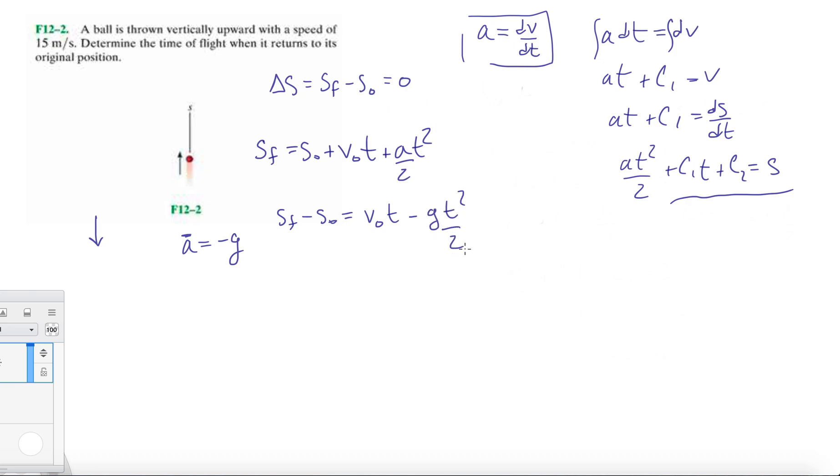T squared over two. In all free fall problems or the projectile motion problems, you're pretty much going to be dealing with a equals negative g.